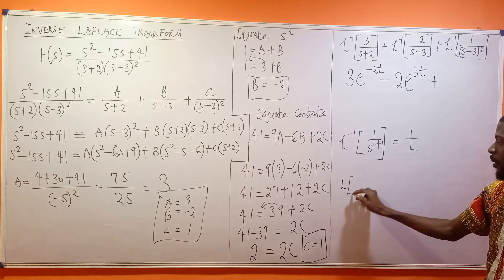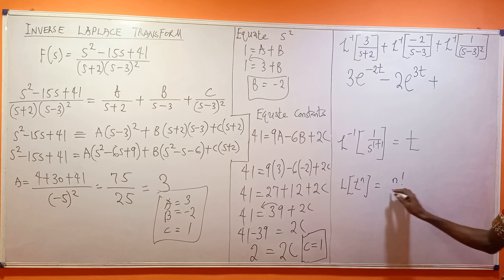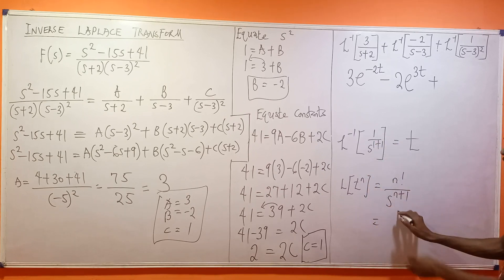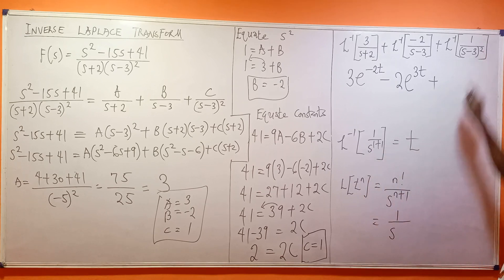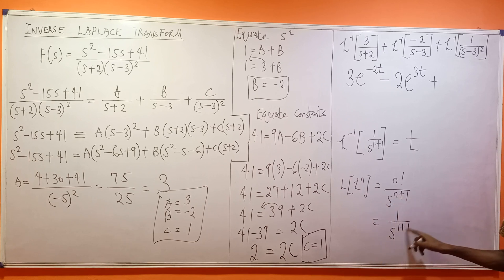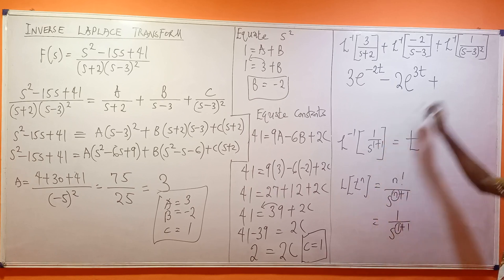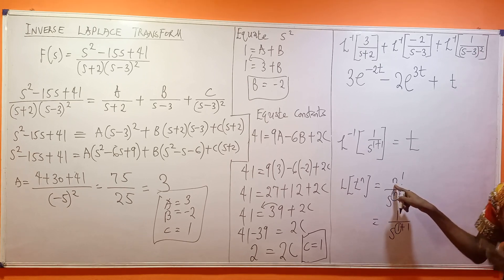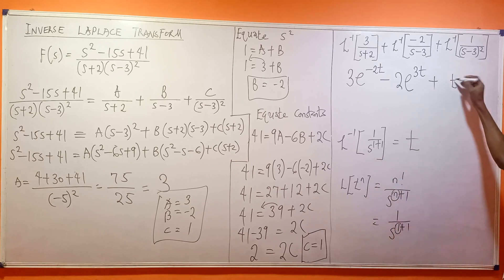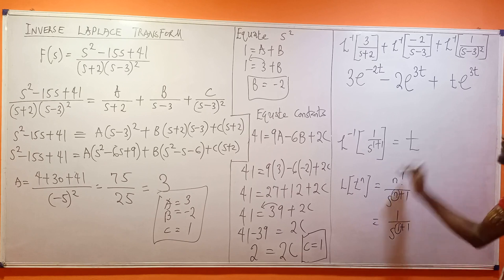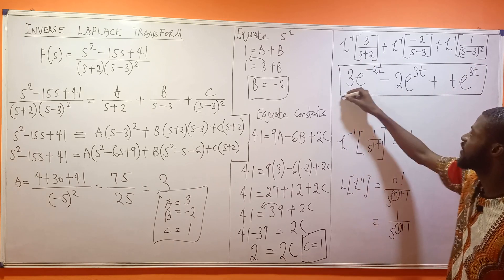The Laplace transform of t^n equals n! over s^(n+1). Since we have 1 over s², and 2 equals 1+1, our n equals 1. So n factorial equals 1, giving just t. By the first shift theorem, replacing s with (s-3) introduces e^(3t), so the final term is t·e^(3t). The complete answer is 3e^(-2t) - 2e^(3t) + t·e^(3t).